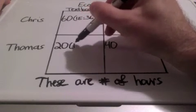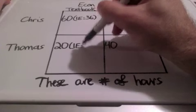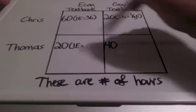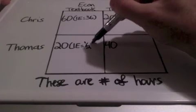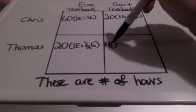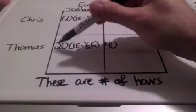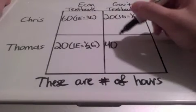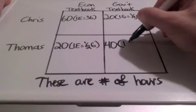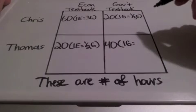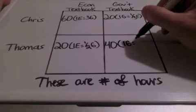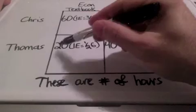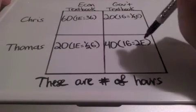For every one economics textbook that Thomas can produce, Thomas can make one-half of a government textbook — 40 goes under 20, so 20 divided by 40 is one-half. Remember, the other side goes under. And for every one government textbook that Thomas can produce, he can make two economics textbooks — the other side goes under: 40 divided by 20 would be two.